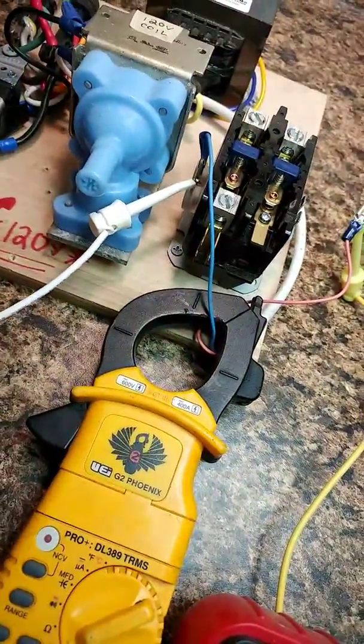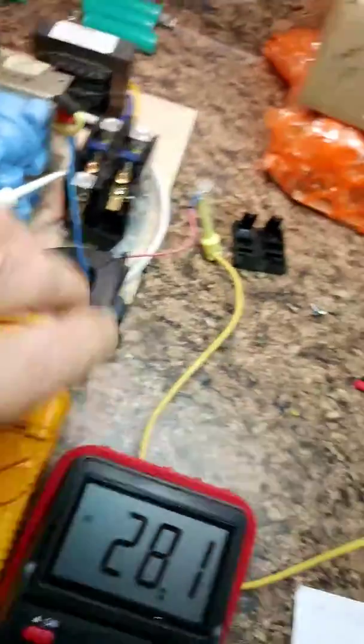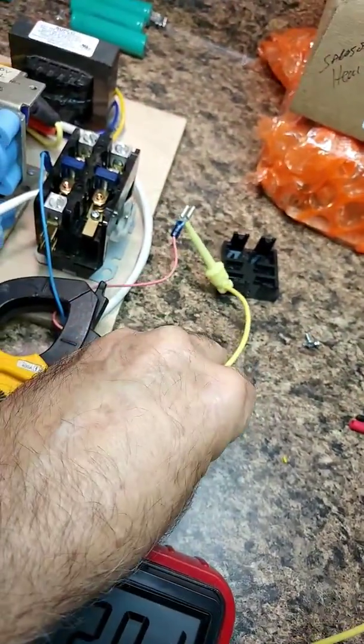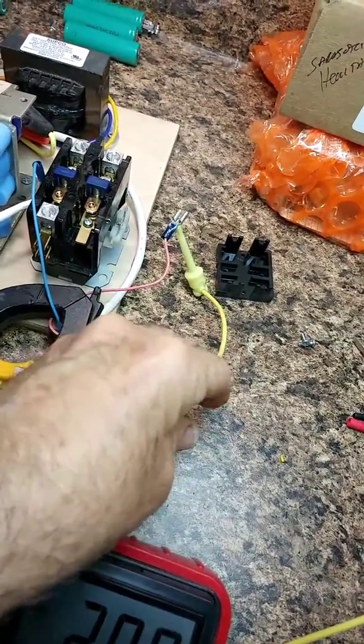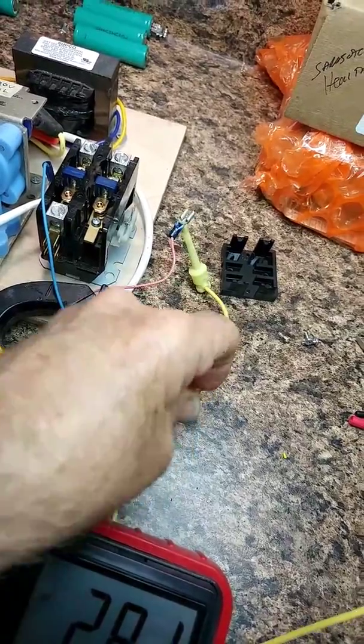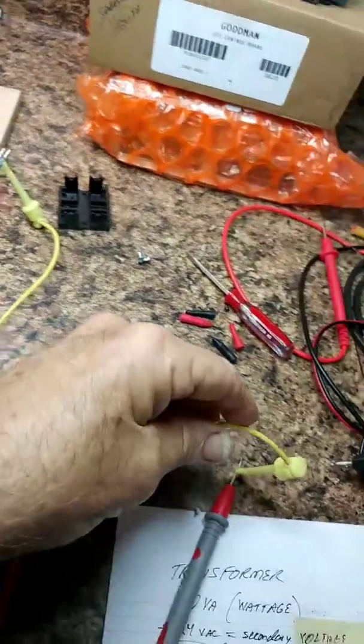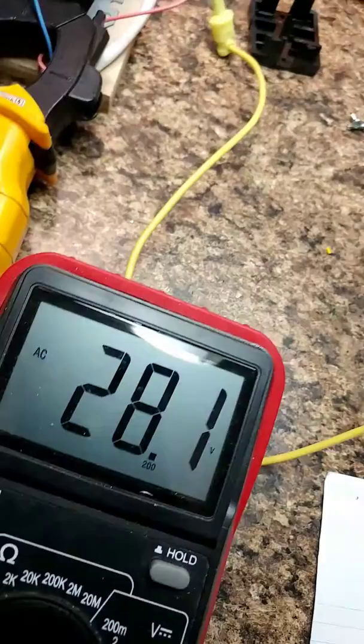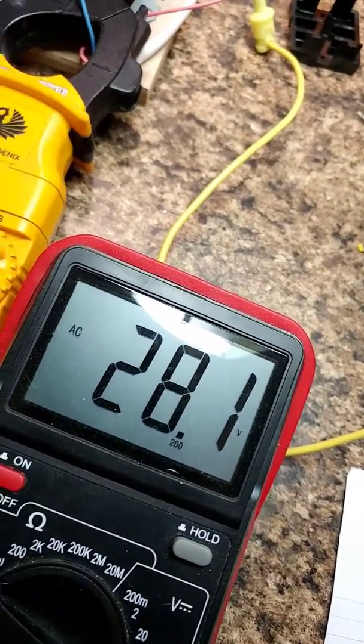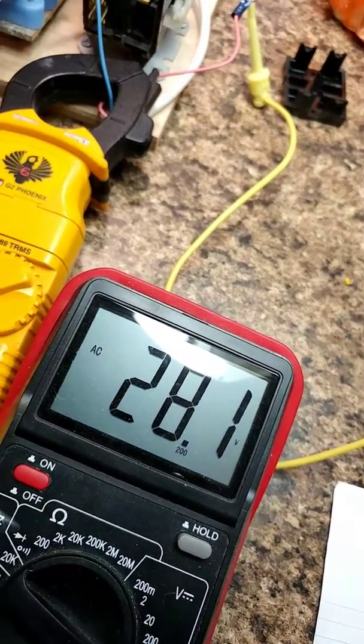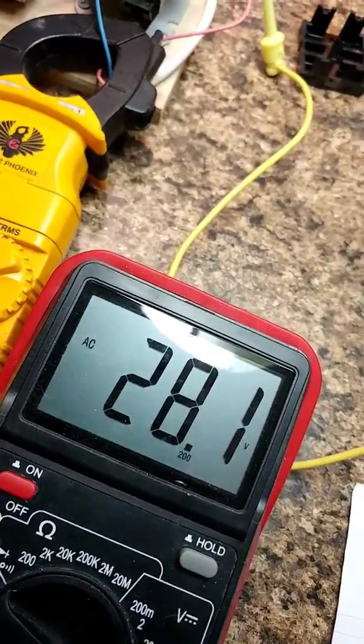So I've got my lead here coming off one side of my coil and what would normally be my Y signal coming off the other side to my other lead. So I'm checking my voltage, which is 28, which is a little high, I know, but usually it's about 24 to 28.